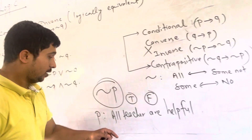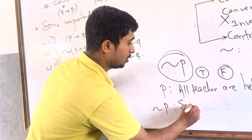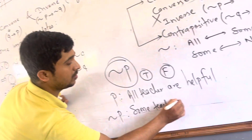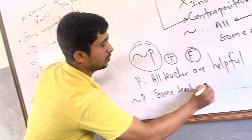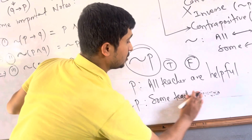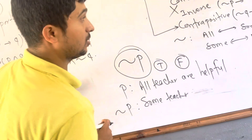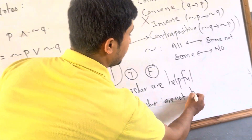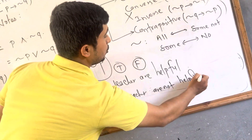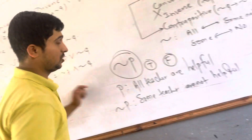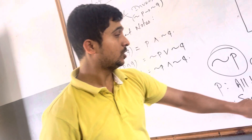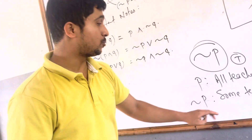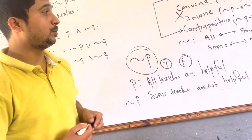For example, 'all teachers are helpful' — the negation becomes 'some teachers are not helpful.' All changes into some and not. If there is 'some' then you have to write 'no teachers are helpful.' So all changes to some-not, and some changes to no.